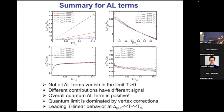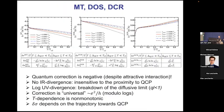Ah, yeah, okay, so this is a summary for all of them. So not all of the Aslamazov-Larkin term vanish. They have different contributions, different signs. Overall it's a positive correction. Quantum-limited is dominated by vertex corrections actually, and it's leading to linear behavior at finite temperatures. But then we need to do all of the rest, and it turns out that all of the rest cancels this positive Aslamazov-Larkin.